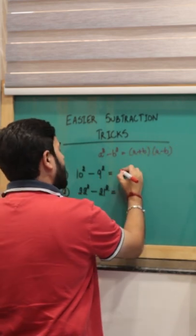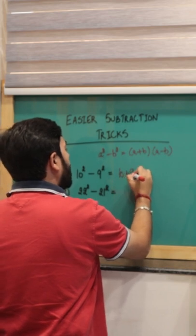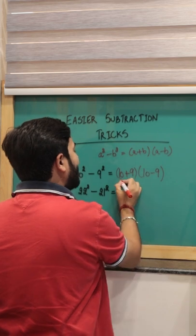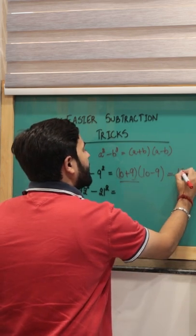So for 10 square minus 9 square, it comes out to be 10 plus 9 and 10 minus 9. That gives an easier 10 plus 9, that is 19.